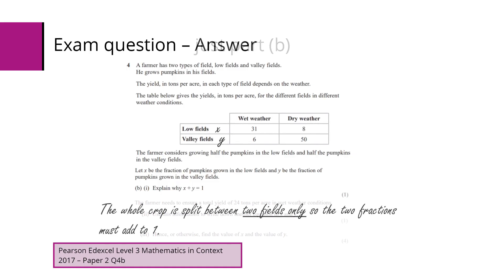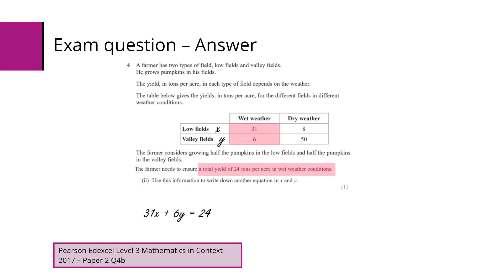So here are the answers. First of all, if x and y stand for the fraction of pumpkins growing in the valley fields and the low fields, well, those two fractions must add up to 1. For part 2, let's just look at the wet weather values here. So we've got 31 times the fraction x plus 6 times the fraction y must equal 24.